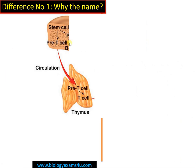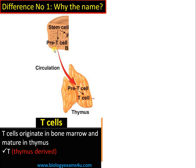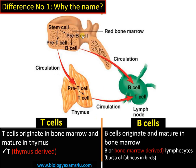As we all know, the site of lymphocyte synthesis is bone marrow. In the case of T cells, pre-T cells are formed from stem cells of the bone marrow, then enter circulation and reach the thymus where maturation takes place — so T cells are thymus-derived. In the case of B cells, both initial and mature B cells originate and mature in bone marrow, therefore called B cells. In birds, it is the bursa of Fabricius, a specialized organ.